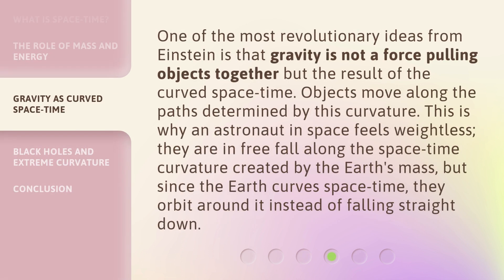One of the most revolutionary ideas from Einstein is that gravity is not a force pulling objects together, but the result of curved space-time. Objects move along the paths determined by this curvature. This is why an astronaut in space feels weightless — they are in free fall along the space-time curvature created by the Earth's mass. But since the Earth curves space-time, they orbit around it instead of falling straight down.